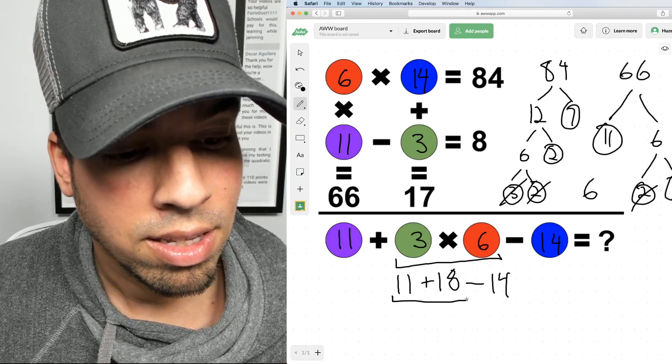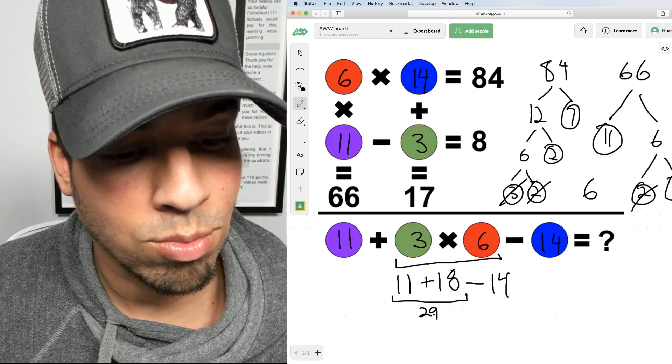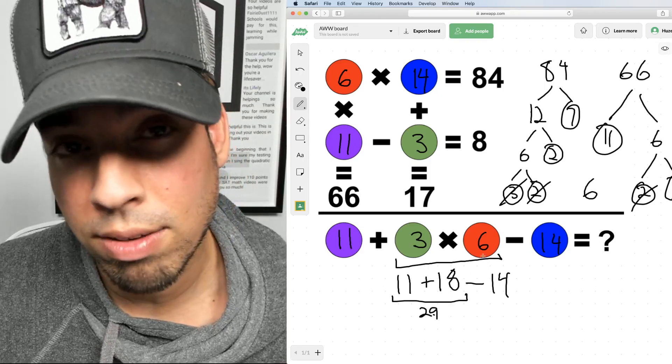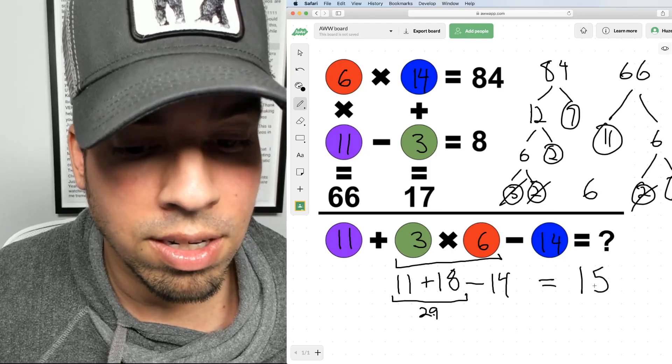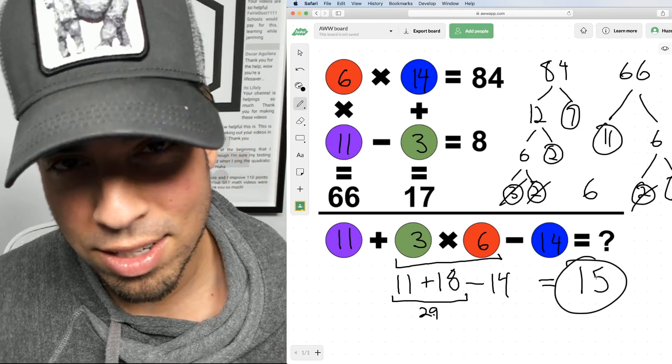And then we carry out the 11 being added to that and then subtracting 14. So what is 11 plus 18? That is 29. And then we do 29 minus 14 because now we're going left to right with plus and minus. 29 minus 14 is 15. And 15 is your answer.